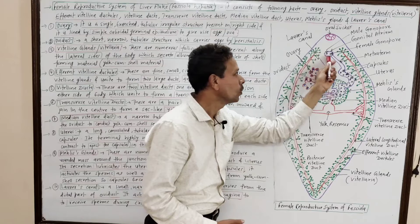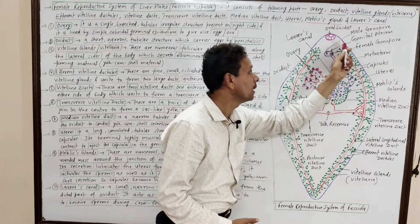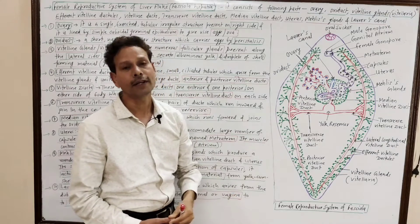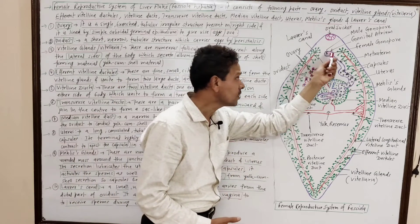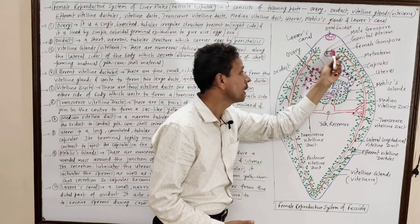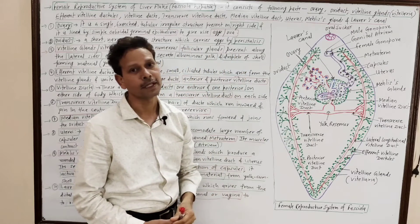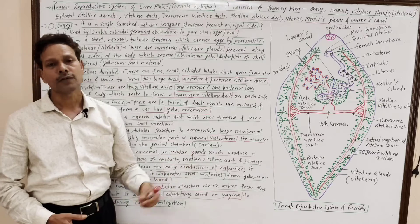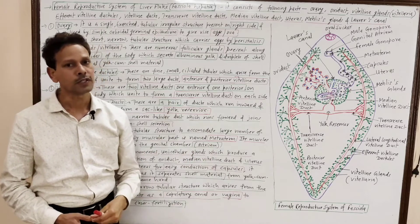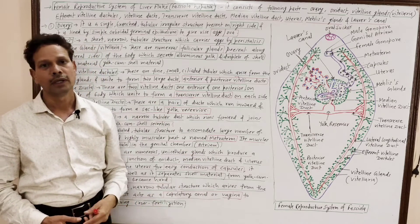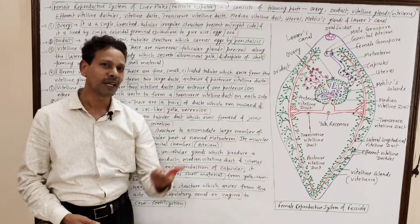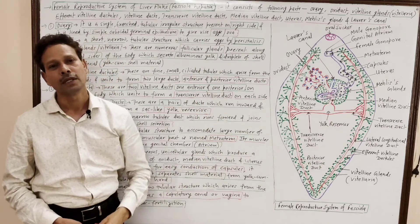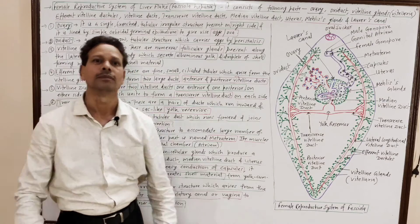This is the common chamber — the female and male common genital atrium — and in this chamber both apertures, male and female gonopores, are present. Dear students, this is all about the reproductive system — male and female reproductive system — of liver fluke. In the next lecture, we will discuss the life history, development, and larval forms of liver fluke. Thank you.